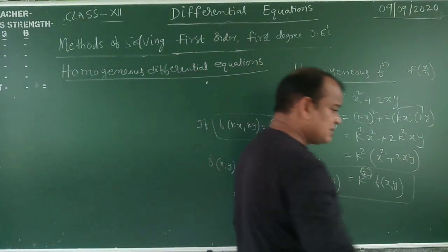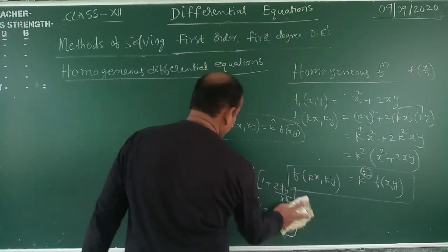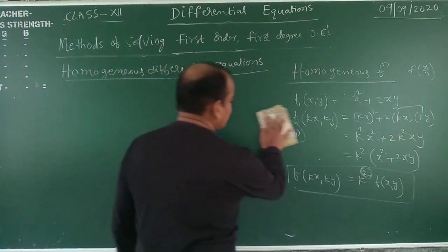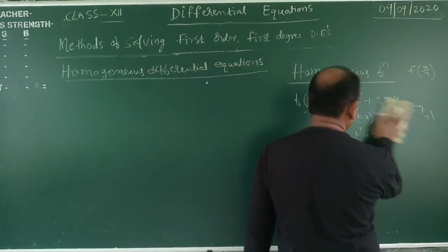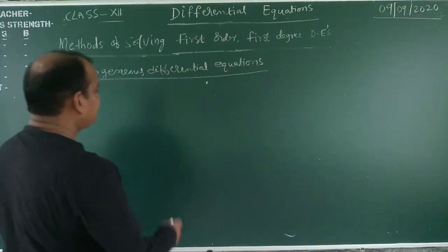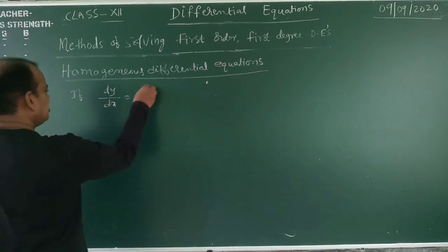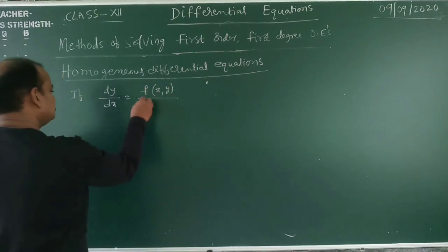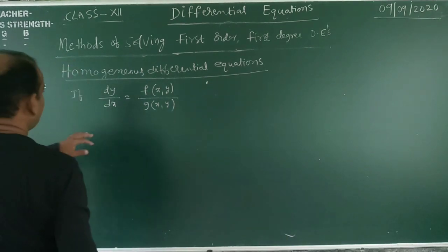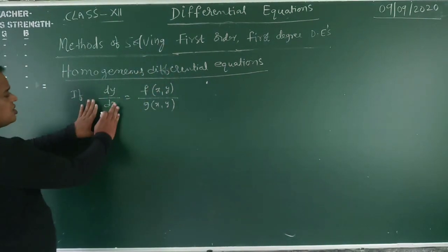Now, how to identify homogeneous functions? Yes. Now, what is a homogeneous differential equation? The first order, first degree homogeneous differential equation. Observe: dy/dx = f(x, y) / g(x, y) is called a first order, first degree equation.